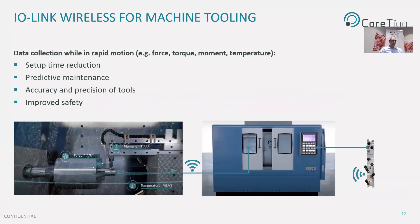By embedding IO-Link Wireless radio components inside machine tooling, it's possible to collect a variety of data such as force, torque, temperature, and vibration. The data from the machine tool is transmitted from inside the machine via the IO-Link Wireless module, which can also be battery powered, and received by the IO-Link Wireless master for communication to the PLC or external applications. This enables improved product quality and yield, reduced setup time, predictive maintenance, improved tool accuracy and precision, and even improved safety — as machine tools not operating properly can damage the machine and operating personnel.